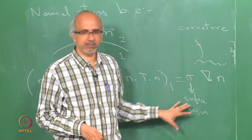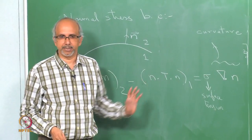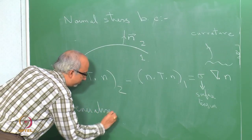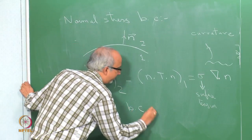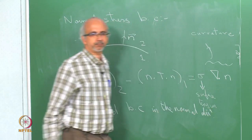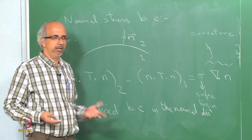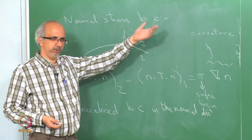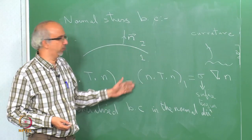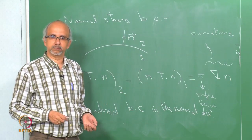Here sigma is the surface tension and del dot N represents the curvature. This generalizes the familiar P1 minus P2 equals sigma over R (or 2 sigma over R for a sphere) from hydrostatics, where the 1/R term comes from the curvature. The formula reduces to the correct curvature for cylinders and spheres. With these boundary conditions established along with the continuity equation and Navier-Stokes equation, we are set to solve problems.